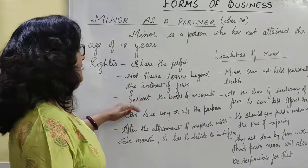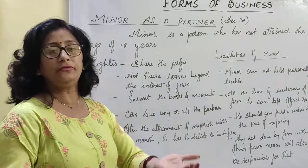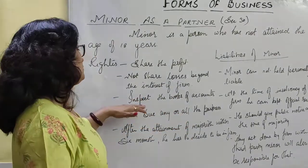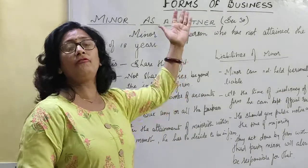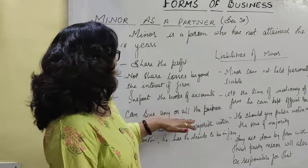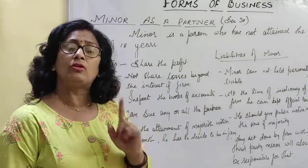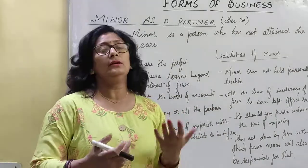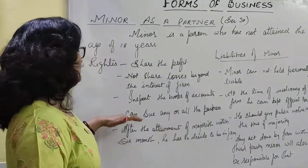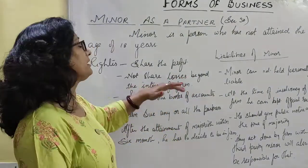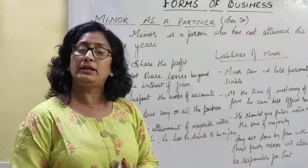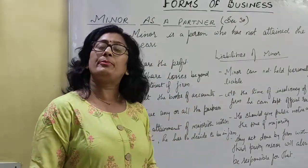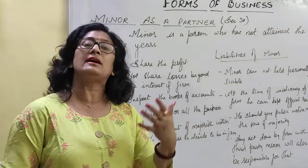He also has the right to inspect the books of account. Being a partner, if he has been admitted in the partnership, then definitely an agreement will be done, and as he is also a partner, he can inspect the books of account of the partnership. He can also sue — he can file a case against the partner if they are not paying his profit share.